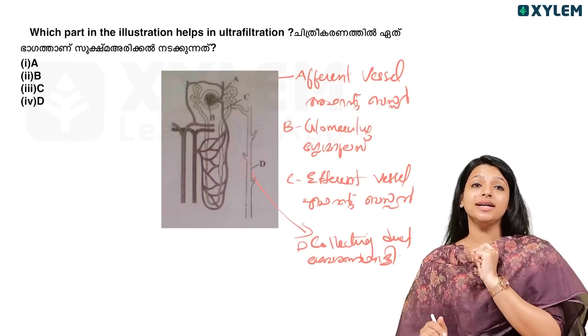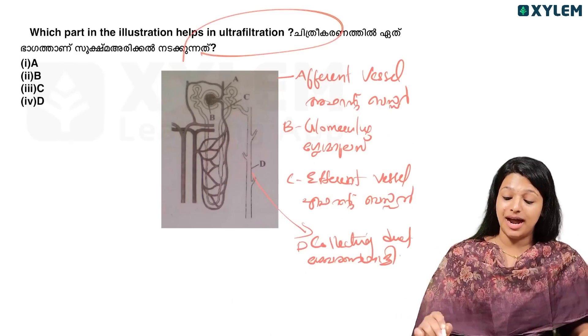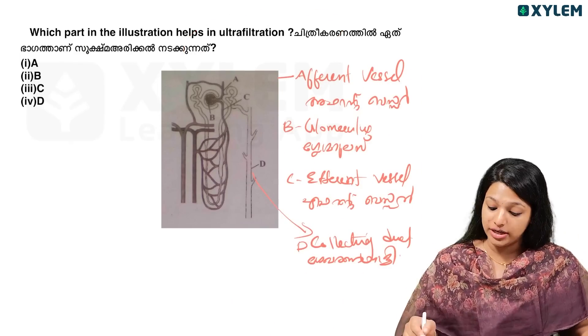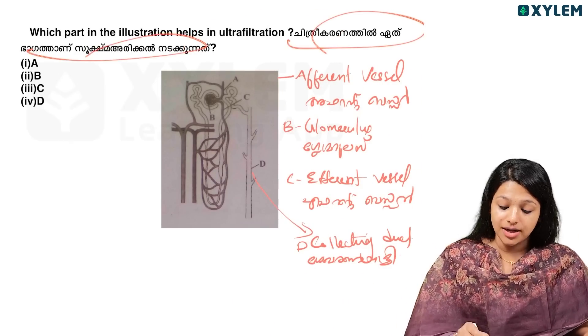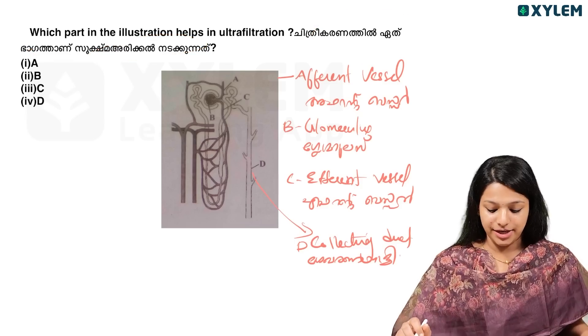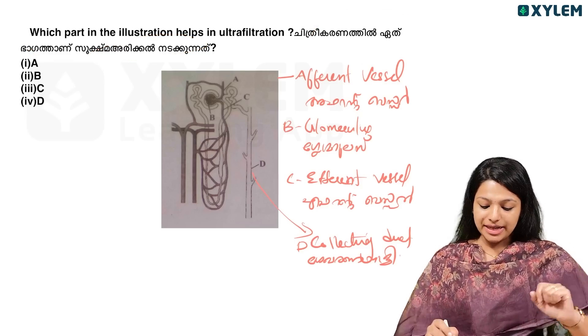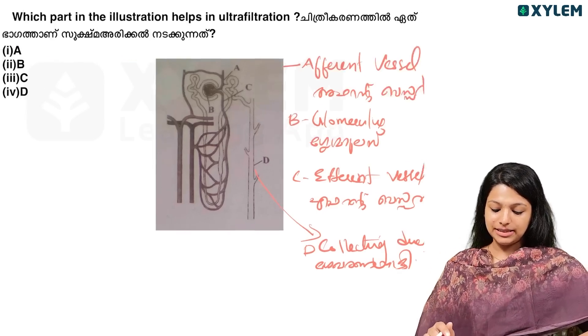Which part in the illustration helps in ultrafiltration? Observe the diagram — you can see options A, B, C, and D.